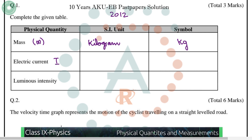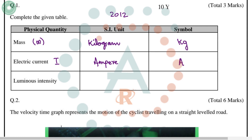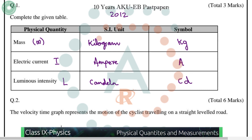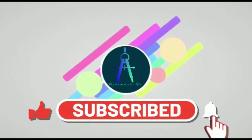Electric current has symbol I and SI unit ampere (A). Luminous intensity is represented by L and its SI unit is candela (cd). These are the answers to this question. Thanks for watching — don't forget to like, comment, share, and subscribe.